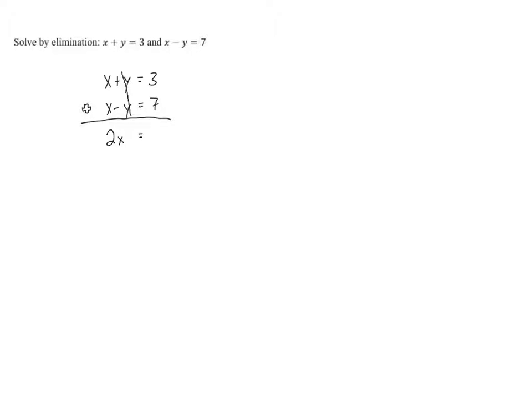And then on the right, 3 plus 7 equals 10. So this problem works really well for elimination because when we stack the equations on top of each other and add them together, the y's end up canceling.